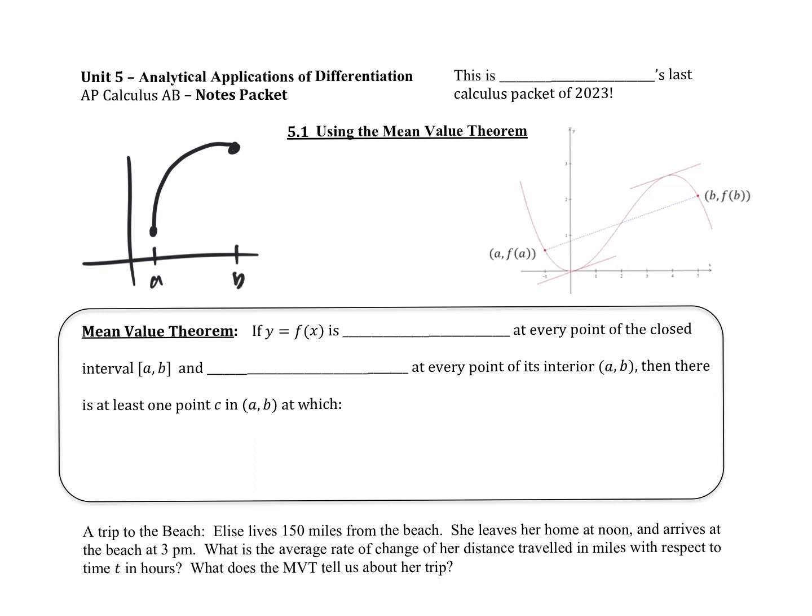Would you say my average rate of change is positive or negative from A to B? Positive. And that's called a secant line because it goes through the graph twice.